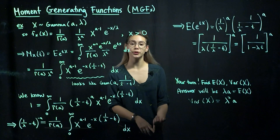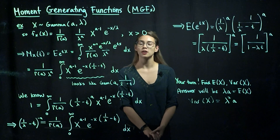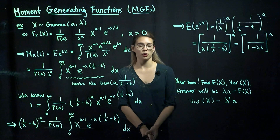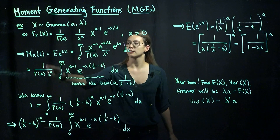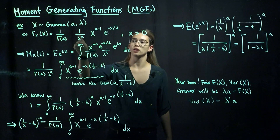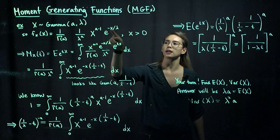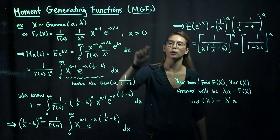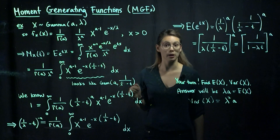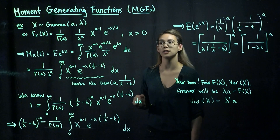We've looked at MGFs for Bernoulli and binomial, and now it's time to think about continuous random variables. Let's use a gamma distribution with parameters a and lambda. Our PDF looks like this: 1 over the gamma function of a, times 1 over lambda to the a, times x to the a minus 1, times e to the negative x over lambda, and this is just for x greater than 0. There are a couple different parameterizations for a gamma distribution, and this is the PDF we're going to use in this example.